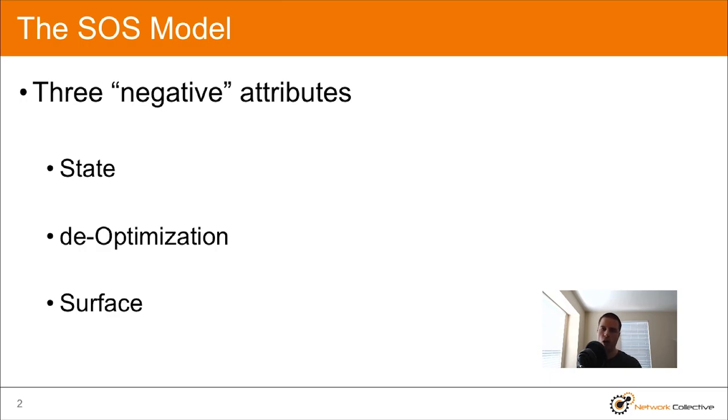So if we look at it this way, all three of the components have negative connotation. That means that we want to reduce these negatives. We want to reduce state. We want to reduce de-optimization, which effectively means increase optimization. And we want to decrease surface.